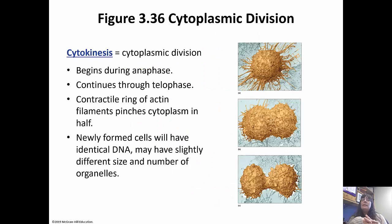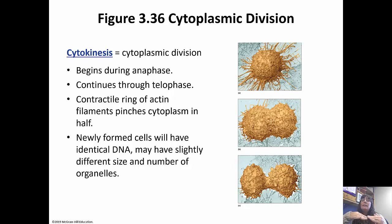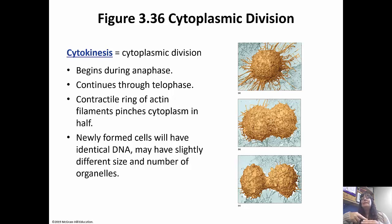Cytokinesis is when the cytoplasm divides. It starts during anaphase and continues through telophase. A contractile ring of actin filaments pinches the cytoplasm in half, forming that cleavage furrow. Newly formed cells have identical DNA but might have different sizes and numbers of organelles — the important part is that the DNA is identical.